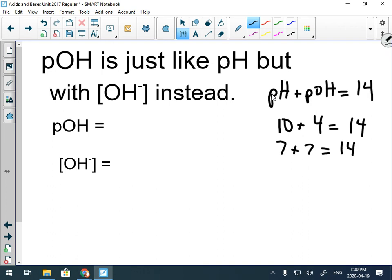All of the formulas for pOH are the same as the formulas for pH. The exception is, instead of hydronium, we're talking about hydroxide. So finding the power of hydroxide, you take the negative log of the concentration of hydroxide. And if you're finding the hydroxide concentration, you take the inverse log of pOH.